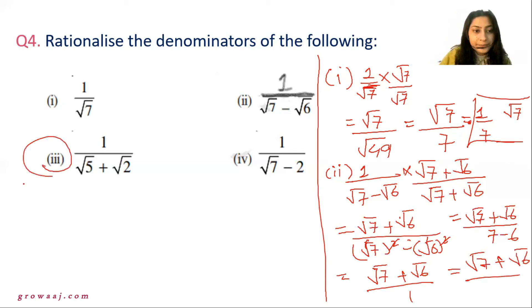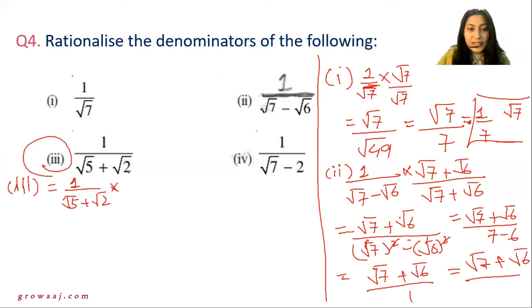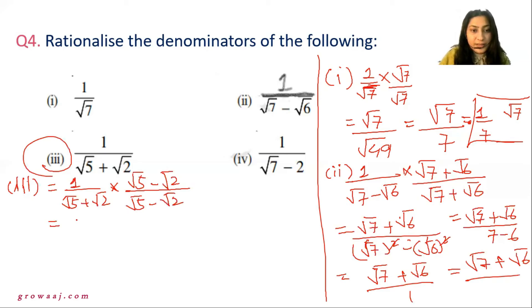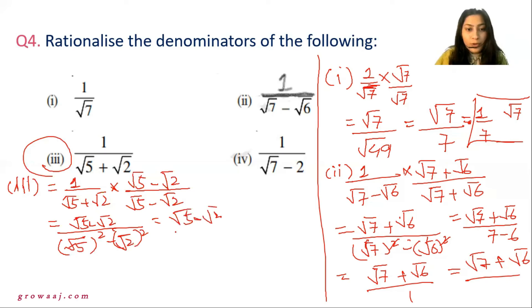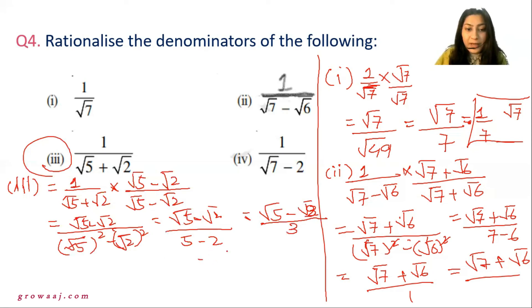Next is 1 by square root of 5 plus square root of 2. You multiply by the conjugate in the opposite sense, which is square root of 5 minus square root of 2 divided by square root of 5 minus square root of 2. The denominator uses the formula a squared minus b squared: square root of 5 squared minus square root of 2 squared, giving 5 minus 2 equals 3. So the result is square root of 5 minus square root of 2 divided by 3.